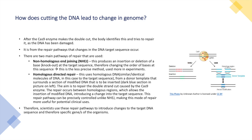The aim is to repair the double-stranded break caused by the Cas9 enzyme. The repair occurs between homologous regions, which allows the insertion of modified DNA, introducing a change into the target sequence. This repair pathway can be precisely controlled, unlike non-homologous end joining, making it much more useful for future potential clinical uses. Scientists use these repair pathways to introduce changes to the target DNA sequence and therefore specific genes of the organism.